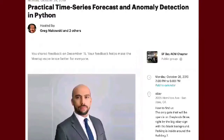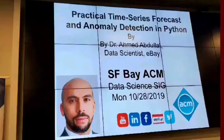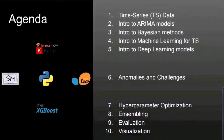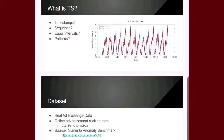The Association for Computing Machinery is an international learned society for computing. It was founded in 1947 and is the world's largest scientific and educational computing society.